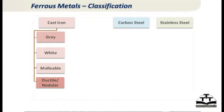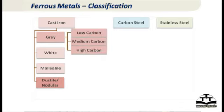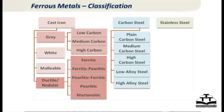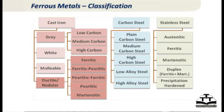Looking at the classification of metals, on the ferrous side we have cast iron, carbon steels, and stainless steels. Within cast iron the most popular is grey iron, followed by malleable iron, and increasingly ductile iron, also called ferrardal graphite iron. Within grey iron we have low, medium, and high carbon grades. Within ductile iron we have ferritic, pearlitic, or combinations depending on which phase is in higher quantities. For steels, we classify them as plain, medium, or high carbon steel, or low alloy or high alloy steel. Within stainless steels we have austenitic, ferritic, martensitic, and other types depending on their treatments or availability.